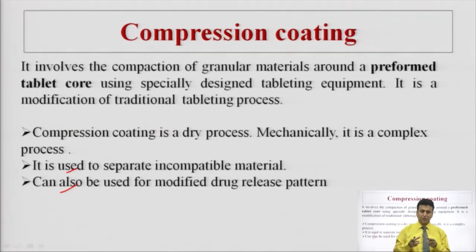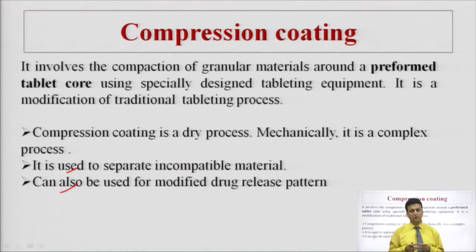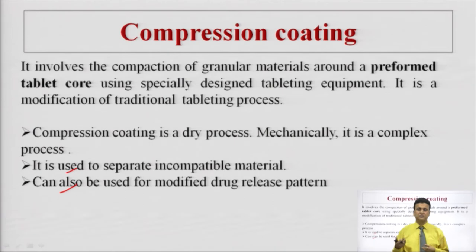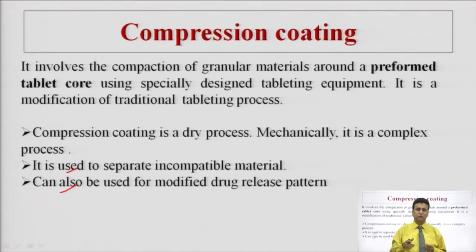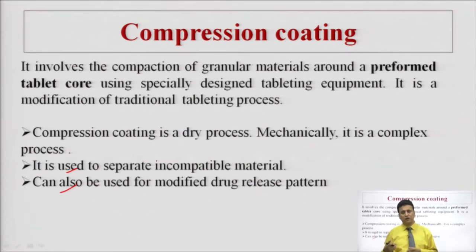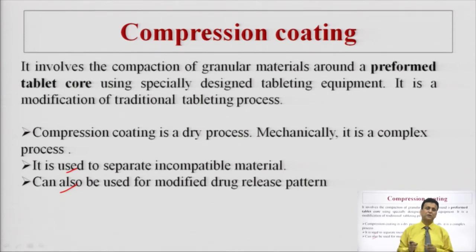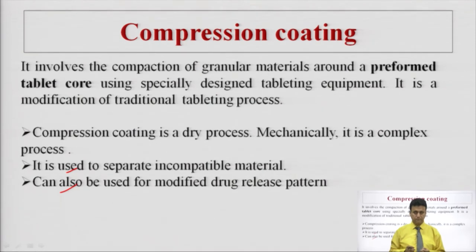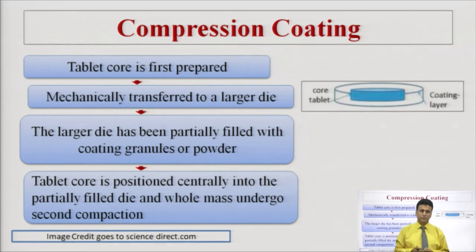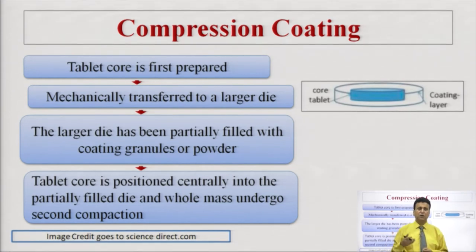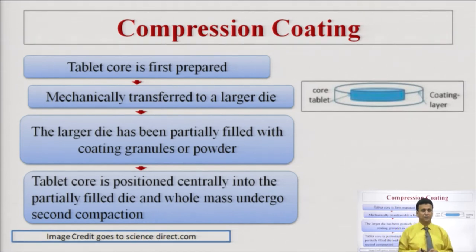Compression coating can also be used for modifying drug release. For example, the inner core can be of immediate release polymer and the outer coating of modified release — or vice versa. First the outer layer will dissolve immediately, releasing drug at an early stage, and then the second coating will release the drug slowly. The process: tablet core is first prepared, then mechanically transferred to a die. The large die is partially filled with coating granules or powder, the tablet core is positioned centrally, and the whole mass undergoes a second compaction.